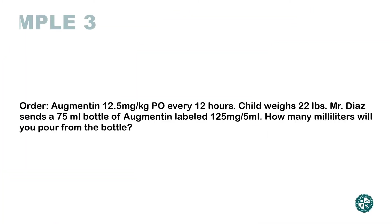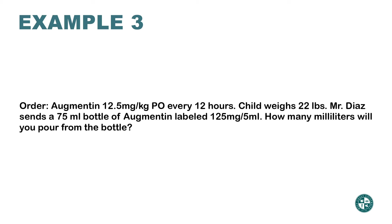Here's another example, a little bit longer. The order: Augmentin 12.5 milligram per kilogram per mouth every 12 hours. The dog weighs 22 pounds. The pharmacy sends a 75 milliliter bottle of Augmentin labeled 125 milligram per 5 milliliters. How many milliliters will you pour? The medicine is ordered in solid format but what we have available is in liquid form — milliliters.